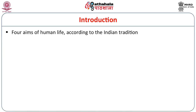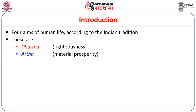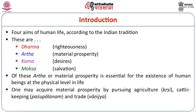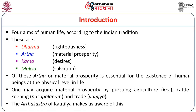According to Indian tradition, there are four aims of human life: Dharma (righteousness), Artha (material prosperity), Kama (desires), and Moksha (salvation). Of these, Artha or material prosperity is essential for the existence of human beings at the physical level. One may acquire material prosperity by pursuing agriculture (Krishi), cattle keeping (Pashupalanam), and trade (Vanijja). The Arthashastra of Kautilya makes us aware of this.